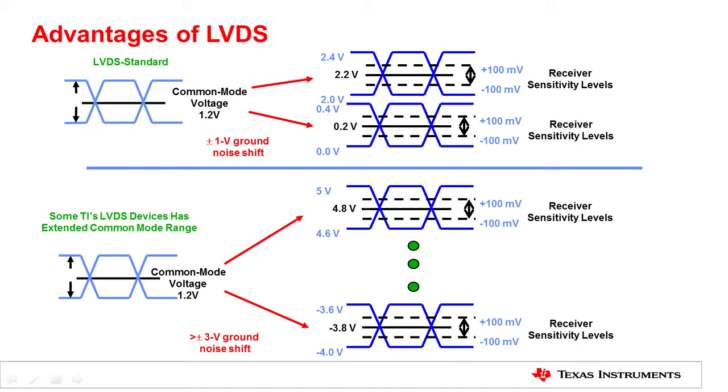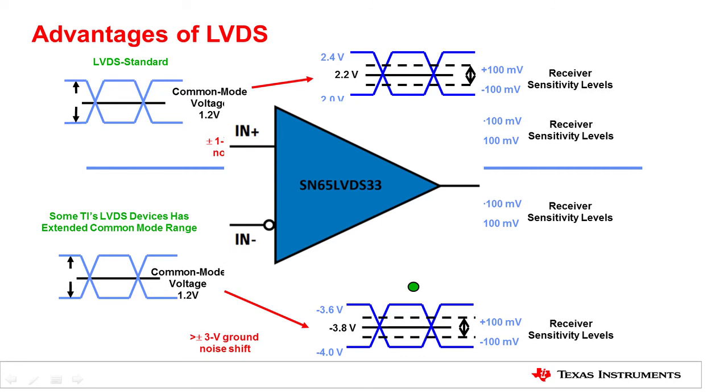LVDS standard defines a common mode input range of 0 to 2.4 volts. However, in a harsh environment or over long distance, oftentimes this range may not be sufficient. Texas Instruments developed devices that have about three times the standard input voltage range, from negative 4 volts to 5 volts. This is a huge advantage over standard LVDS driver and receiver. These devices, such as SN65LVDS33, should be considered when the end application is used in harsh environments.